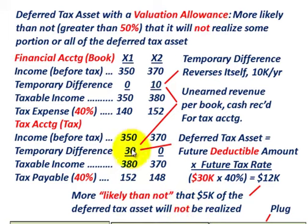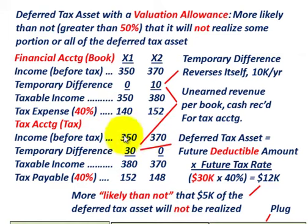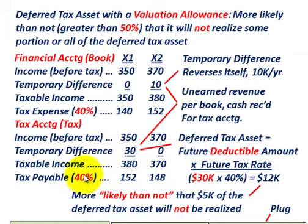Let's calculate our taxes payable for the two years. For year X1, we start with income before taxes of $350,000 — based on our financial accounting or book accounting income. We add in the unearned revenue received in advance, the temporary difference of $30,000, to get taxable income of $380,000. Times the 40% tax rate, that gives us taxes payable of $152,000.